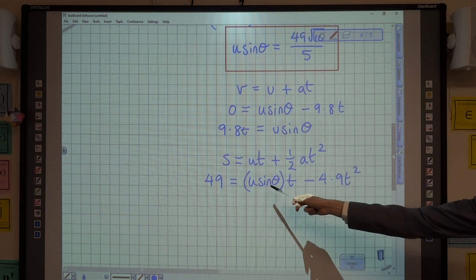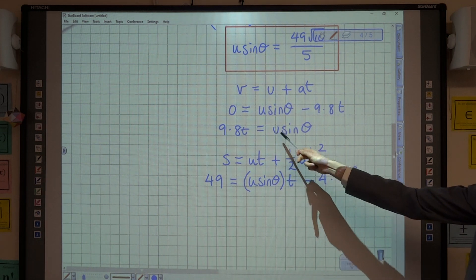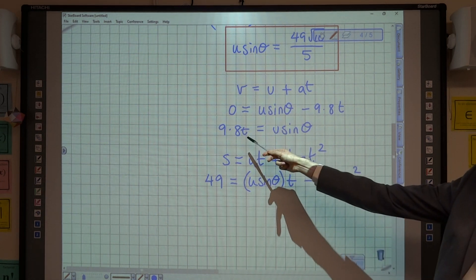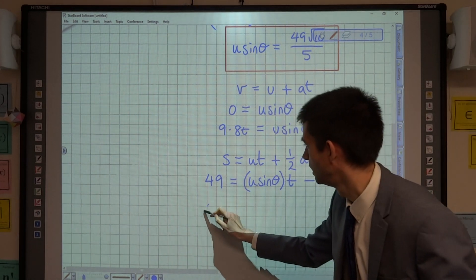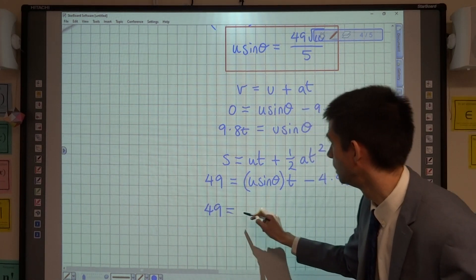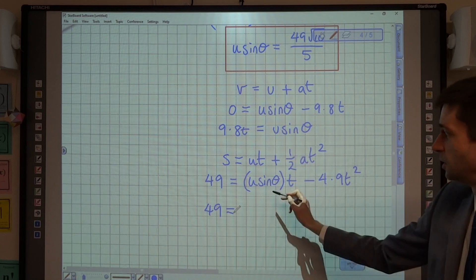Okay, so u sin theta, we have here, is equal to 9.8t from our other equation. So what I'm now going to do, is I'm going to substitute 9.8t in for u sin theta, and that is going to give me 9.8 t squared when I multiply it by that t.